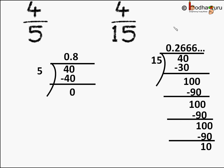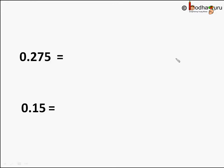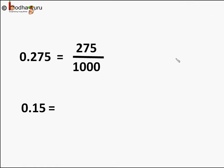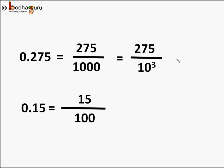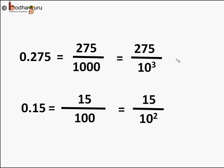So what is the difference between 4 by 5 and 4 by 15? In 4 by 5 we are getting a terminating decimal number, and in 4 by 15 we are getting a recurring non-terminating decimal. If we study decimals, we get a simple form: 0.275 can be written as 275 by 1000, by removing the decimal point, which is equal to 275 by 10 to the power 3. And 0.15 can be written as 15 by 100, which is equal to 15 by 10 to the power 2.